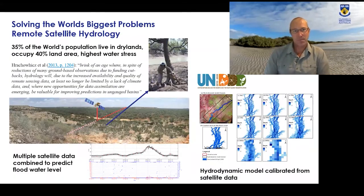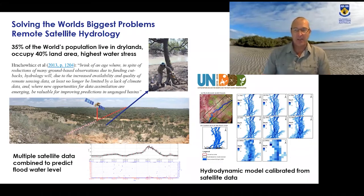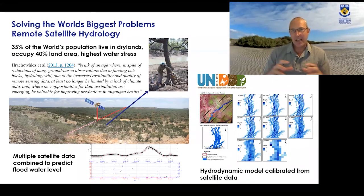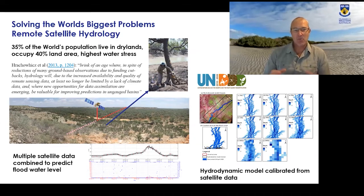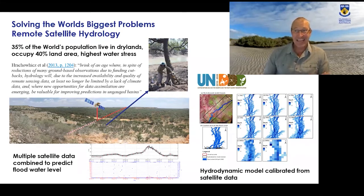Some of the big-scale research questions I work on relate to dryland areas — where potential evaporation is much greater than rainfall — leading to acute water stress. We often don't have the data to understand those water resources. We've been working on taking satellite data to make predictions of water level without any on-ground water level data whatsoever, and using satellite data to calibrate hydrological models that tell us where water is in the landscape and how much.